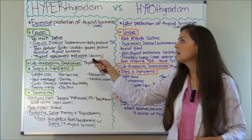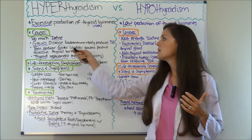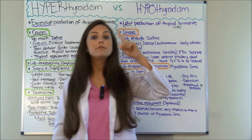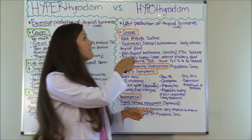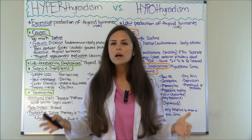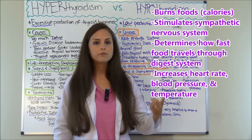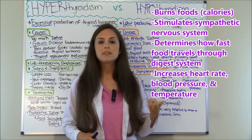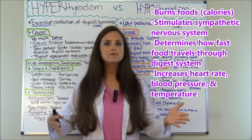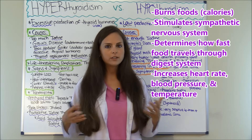Let's start by talking about hyperthyroidism. Let the name of the condition help you — hyper means high, excessive. So in this condition, there's an excessive production of thyroid hormones. On the flip side, with hypothyroidism, there is a low production of thyroid hormones. Thyroid hormones play a vital role in how fast you burn food, stimulate your sympathetic nervous system — which is responsible for your reflexes and reaction time — how fast food travels through the digestive system, and they increase your heart rate, blood pressure, and temperature.